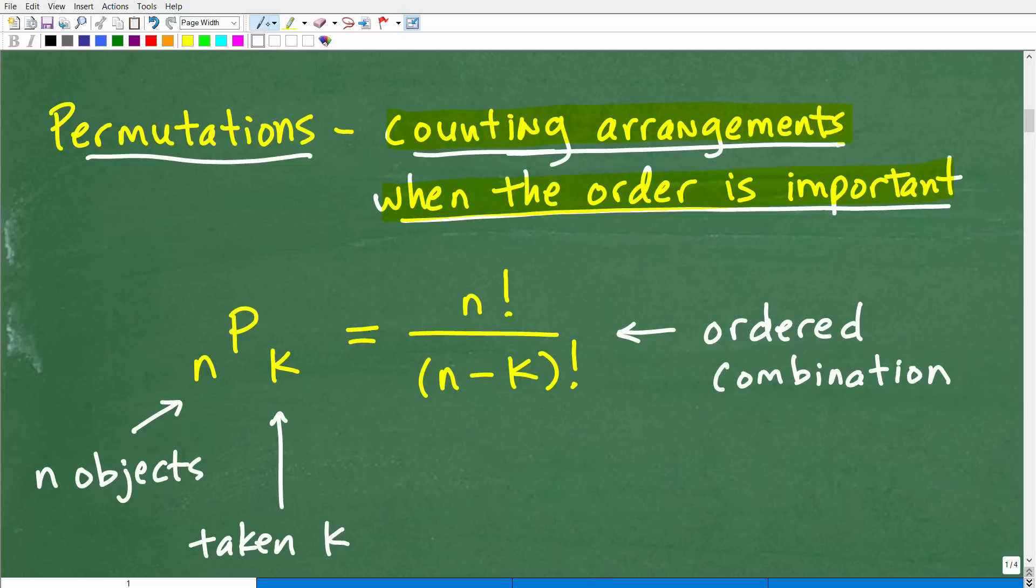So now that we know that this is a permutation, i.e., we're counting arrangements, in this case, we're counting the arrangements of the letters and the order is definitely important. So what is a permutation mathematically? Well, here it is. So let me just go ahead and read you the formula and then I'm going to explain the formula. So the way we say this is nPk is equal to n factorial over n minus k factorial. Again, a good way to think of permutations is an ordered combination.